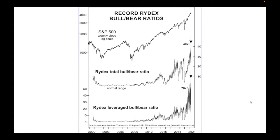The bull-bear ratio — people who think the market is going up versus going down — is an absolute record, completely off the scale compared to the year 2000, and again this is logarithmic. The RYDEX total bull-to-bear ratio is 40 times the normal range. The leveraged bull-to-bear ratio — where people are buying shares so that if the market goes up 1%, they'll get 2% or 3% — is at something 70 times the market, whereas 2000, 2006, and 2008 represented more like the normal range.